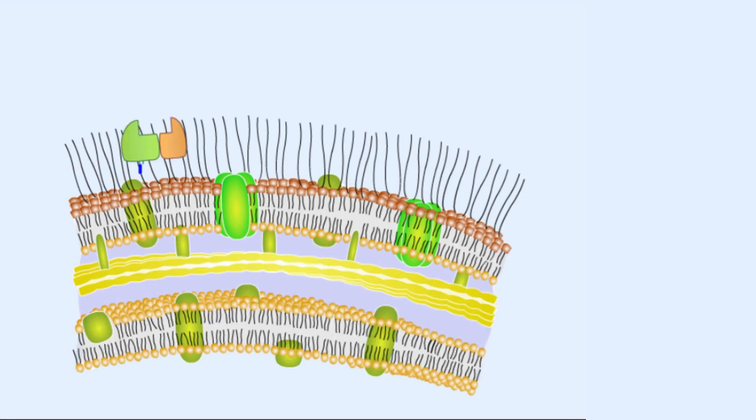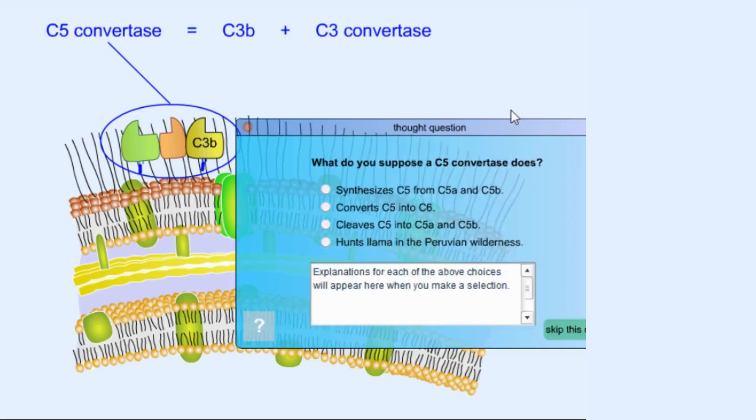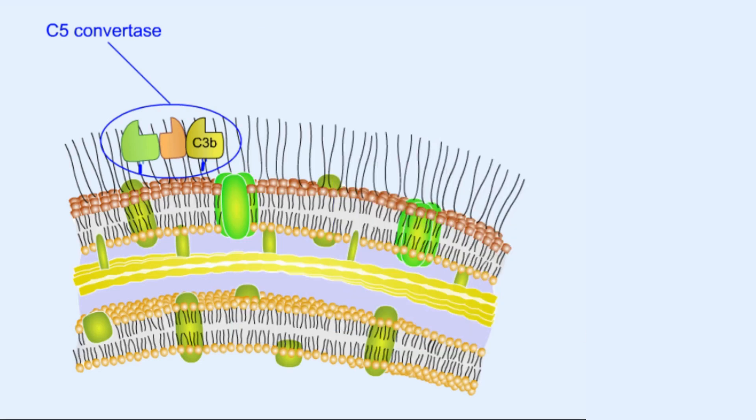C3, this is C5 convertase. It converts a lot of C3B, C2B and C4B. C5 convertase cleaves those C5 into C5A and C5B. Let's look at that. C5 comes into the place. It's cleaved into C5A which is diffused and C5B.